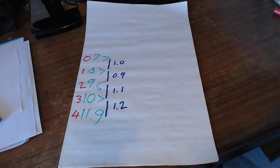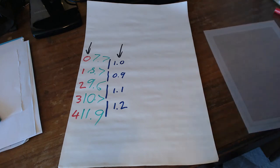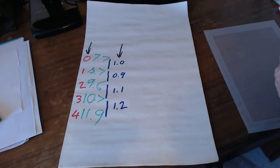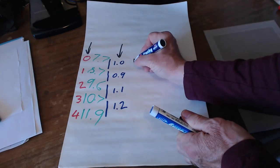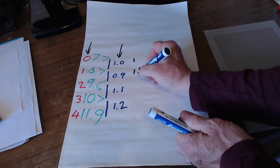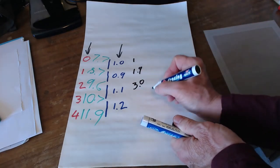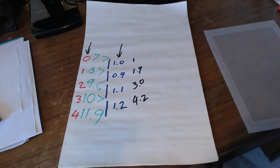My next task is to look at the total extension. We've got one, then it becomes 1.9, to 3.0, to 4.2.